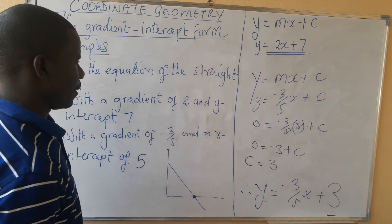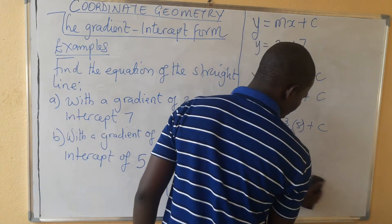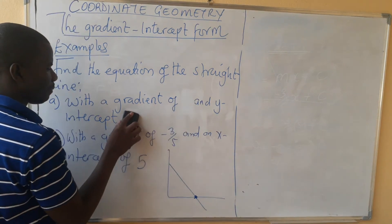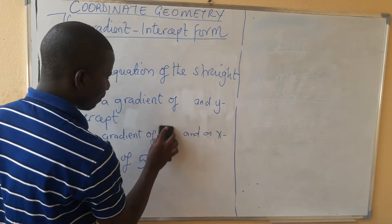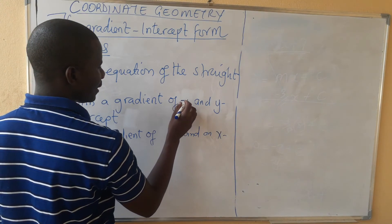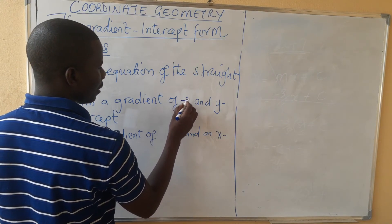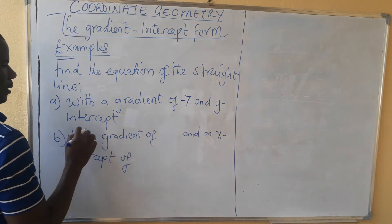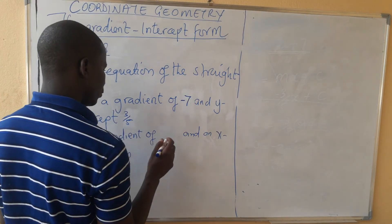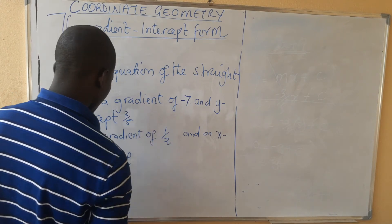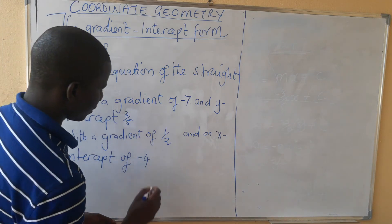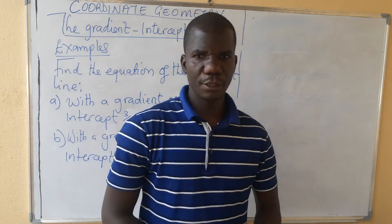Now try these practice problems. First: gradient = 7 and y-intercept = 3/5. Second: gradient = 1/2 and x-intercept = -4. Try to work these out and make sure you practice them.